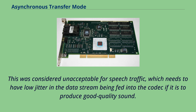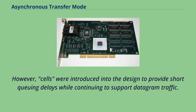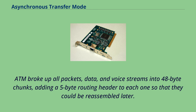A packet voice system can produce this low jitter in a number of ways; the design of ATM aimed for a low-jitter network interface. Cells were introduced into the design to provide short queuing delays while continuing to support datagram traffic. ATM broke up all packets, data, and voice streams into 48-byte chunks, adding a 5-byte routing header to each one so that they could be reassembled later.